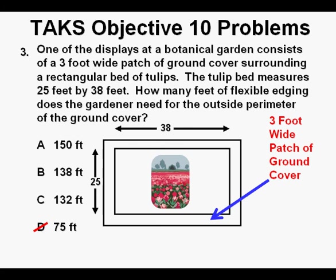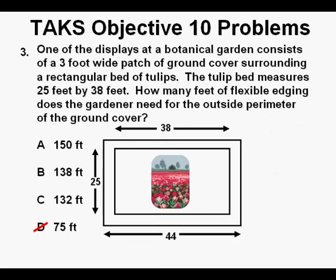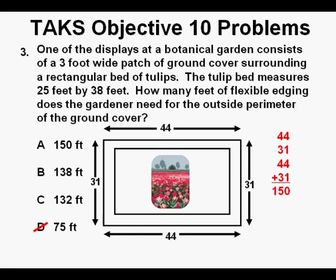And then we add the 3 foot wide patch of ground cover around the outside of the rectangular bed of tulips. So this 3 foot border will add 6 feet to each dimension, so we will have 38 plus 6 or 44 feet as the length, and the width including the path will be 25 plus 6 feet or 31 feet. We can now correctly draw the dimensions on all 4 sides. Then we can either go to our perimeter formula in the formula chart or add all 4 sides together. And that equals 150 feet. And this is where we find 150 feet. So we circle our correct answer A.